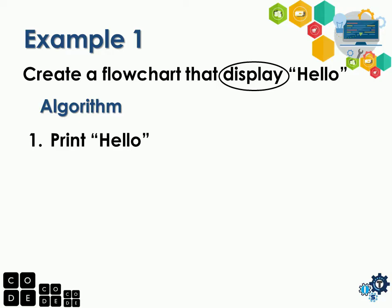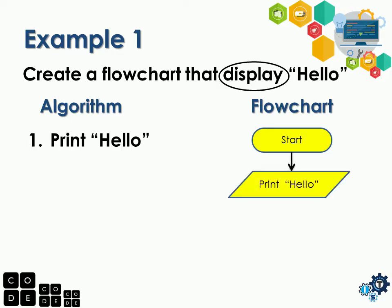Now let's have the flowchart. We have the terminal block 'Start', then the output block. Inside the output block we have 'print hello'. After printing, there's nothing else needed, so we have the terminal block 'End'. That is the first example.